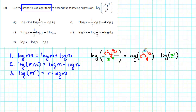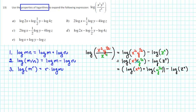Now notice that x squared y to the one-half is a product. We have the logarithm of a product, so we can apply rule number one to this first term. We get the logarithm of x squared plus the logarithm of y to the one-half, minus the logarithm of z to the fourth.